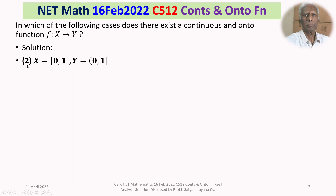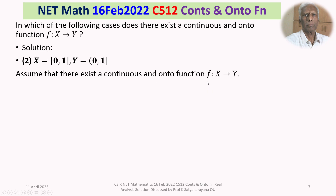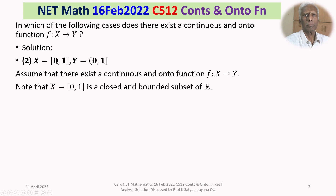Let us first take option 2. X is equal to the closed and bounded interval [0,1], Y is equal to the semi-closed interval (0,1]. Our answer is there does not exist such a function. To say so, we assume that there exists a continuous and onto function f from X to Y. Now, X is closed and bounded, so by the Heine-Borel theorem, X is compact.